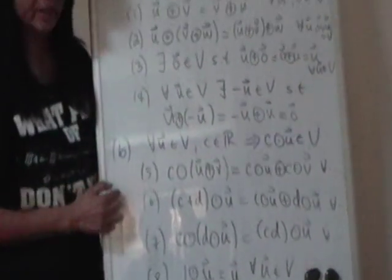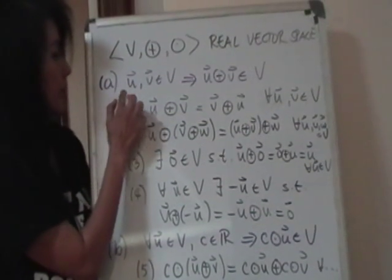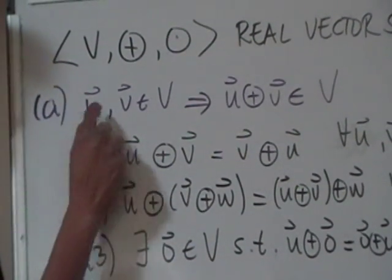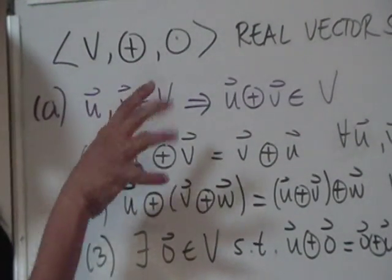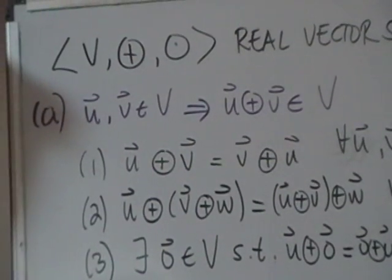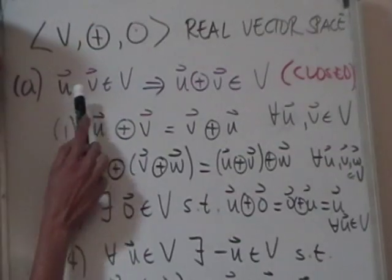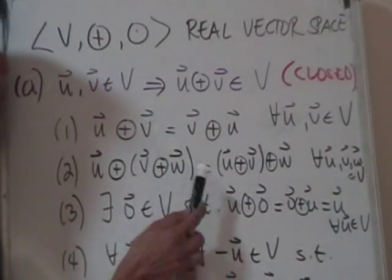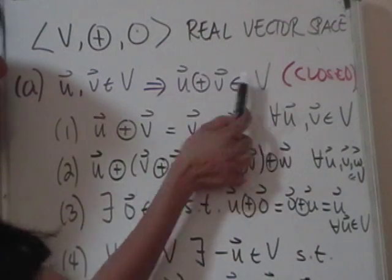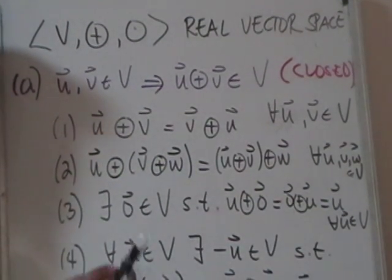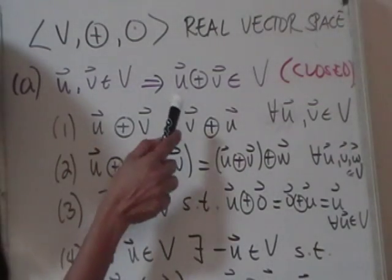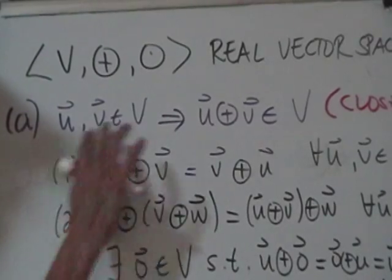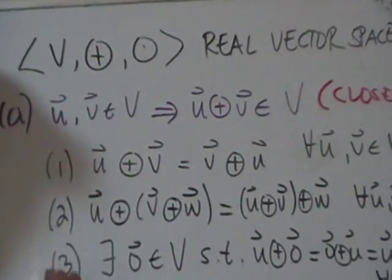Condition A and Condition B are the two most important things to check. Condition A says: if you take any two elements U and V in the set V — I'll use vector notation on top since the book uses boldface letters — when you apply the first operation to these two elements, the answer should also be in V. This is called closure of V under circle-plus. Check this first, because if it doesn't hold, it's pointless to check the remaining conditions.